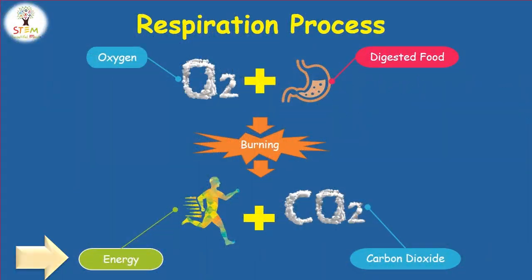Your body gets the energy it needs by burning the digested food. Burning the digested food needs oxygen, so oxygen burns the digested food to produce energy. But there is another substance produced by this reaction, which is carbon dioxide. Carbon dioxide is a harmful substance the body needs to get rid of.